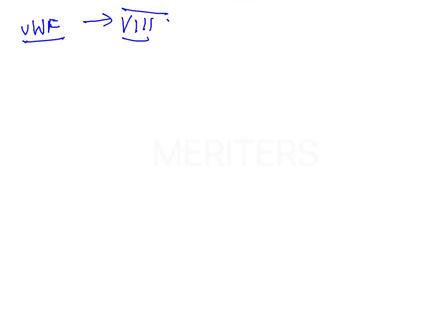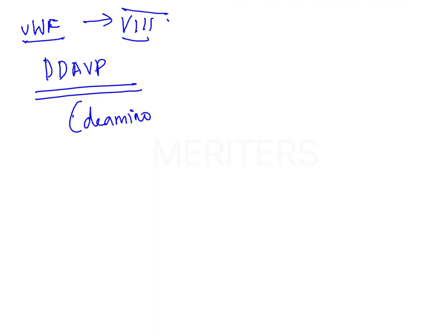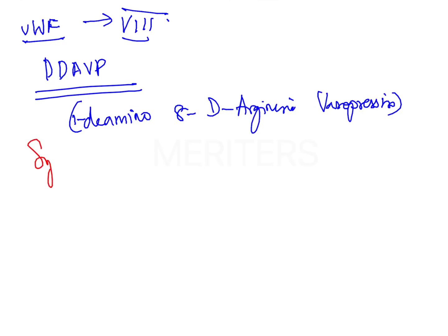Desmopressin is called DDAVP. DDAVP stands for 1-Deamino-8-D-Arginine Vasopressin.